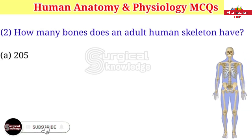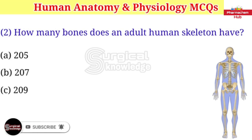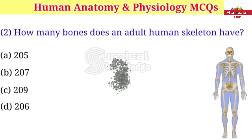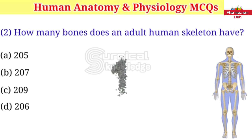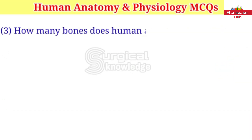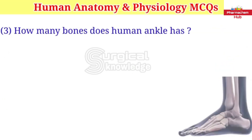How many bones does an adult human skeleton have? A. 205 B. 207 C. 209 D. 206. Right answer is 206.